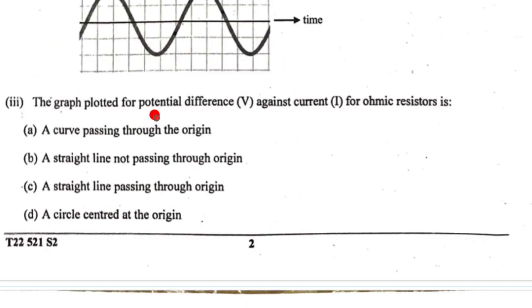The third one: the graph plotted for potential difference V against current I for ohmic resistor. Is it the curve passing through the origin? No, it will be a straight line. So it will be a straight line not passing through the origin, straight line passing through the origin, or the circle centered at the origin. It will be the straight line passing through the origin.